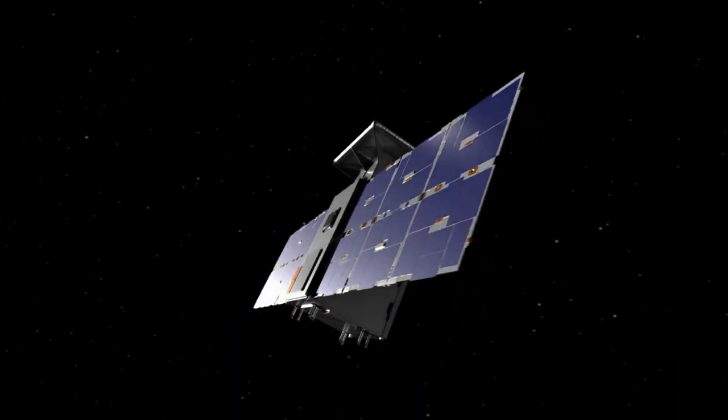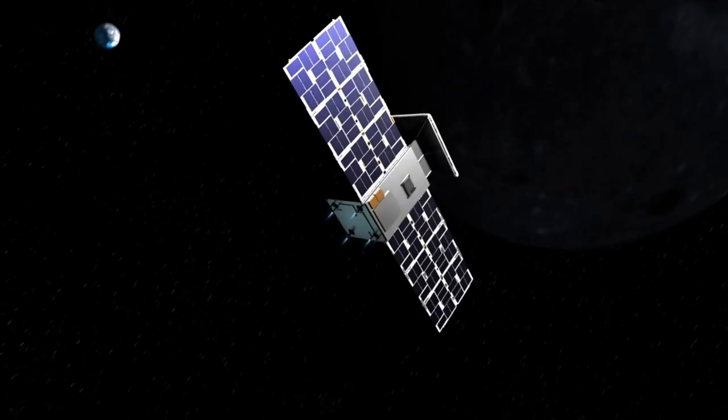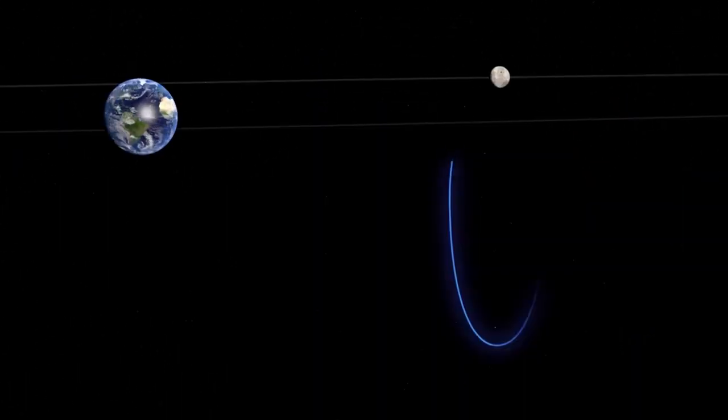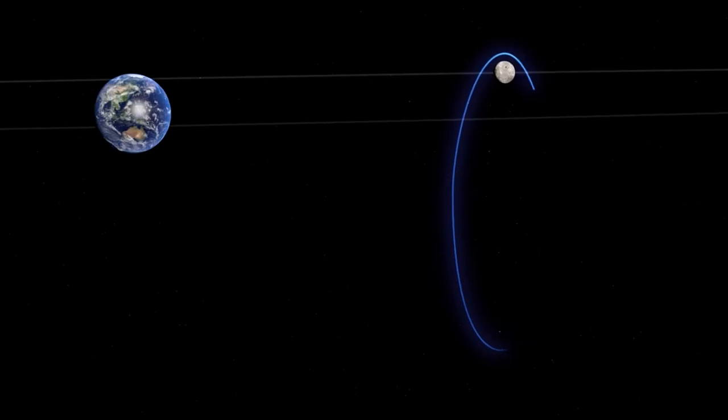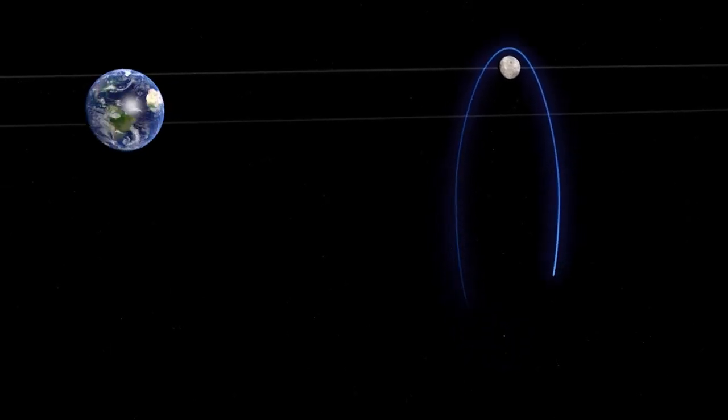Unfortunately, as of right now, while still on track to reach the moon, Capstone is spinning and NASA still lacks the ability to fix it. If NASA were to lose full access to this spacecraft, it could mean a majority of the information meant to be gathered could be lost.